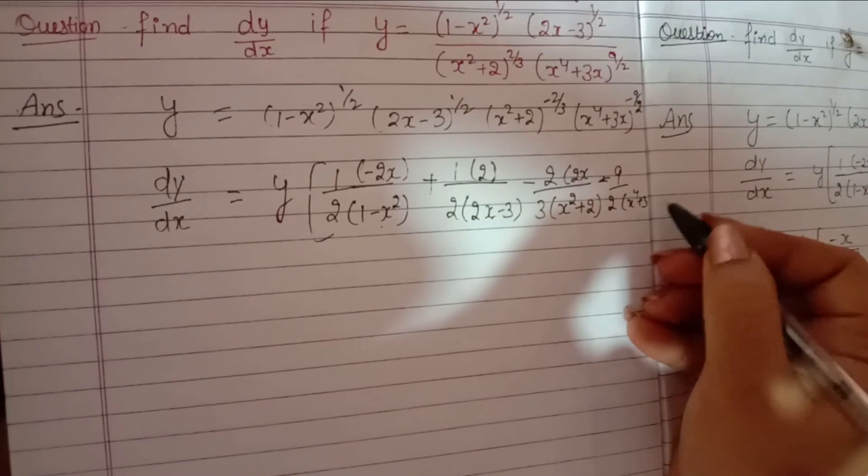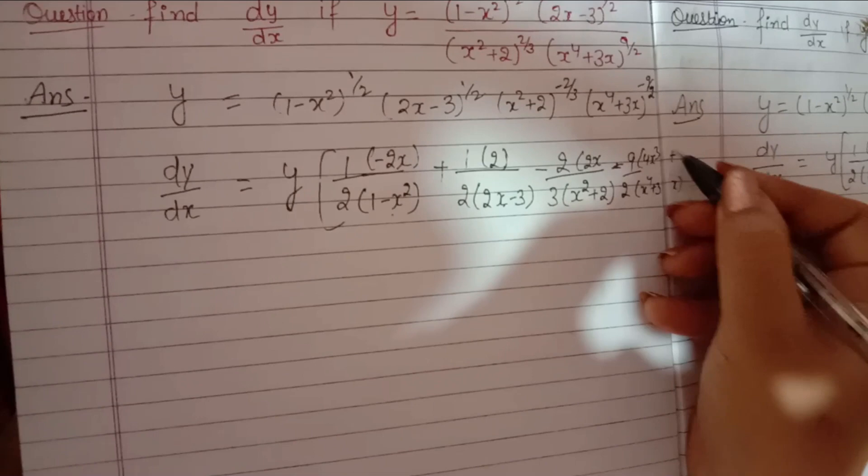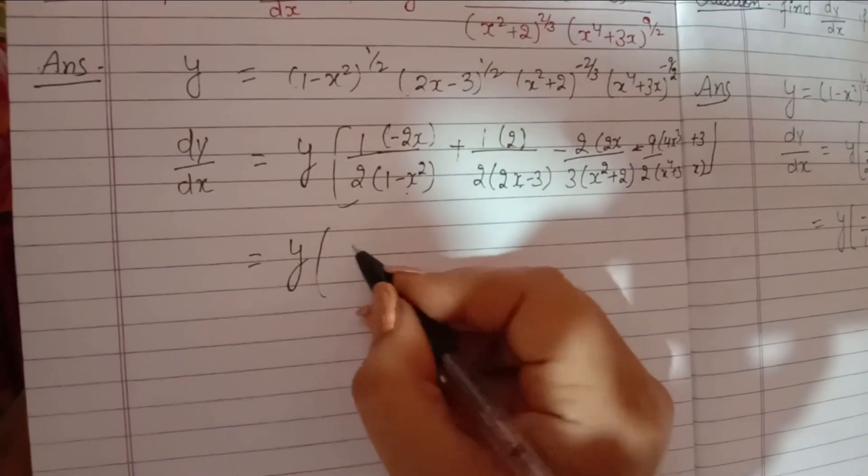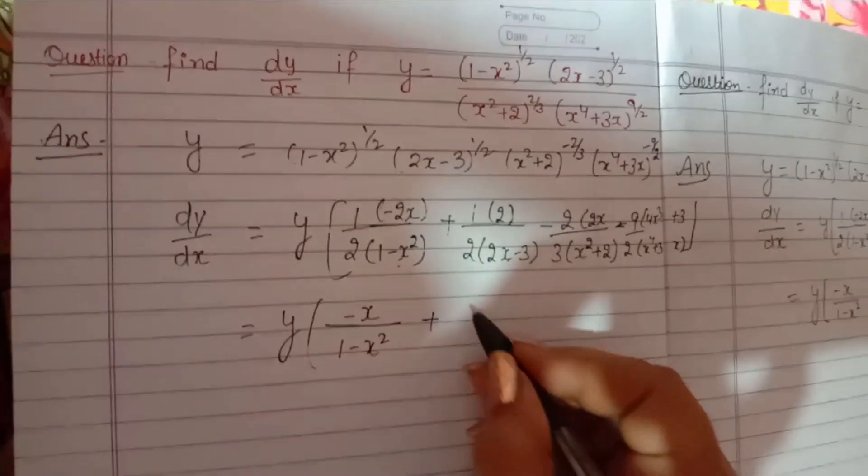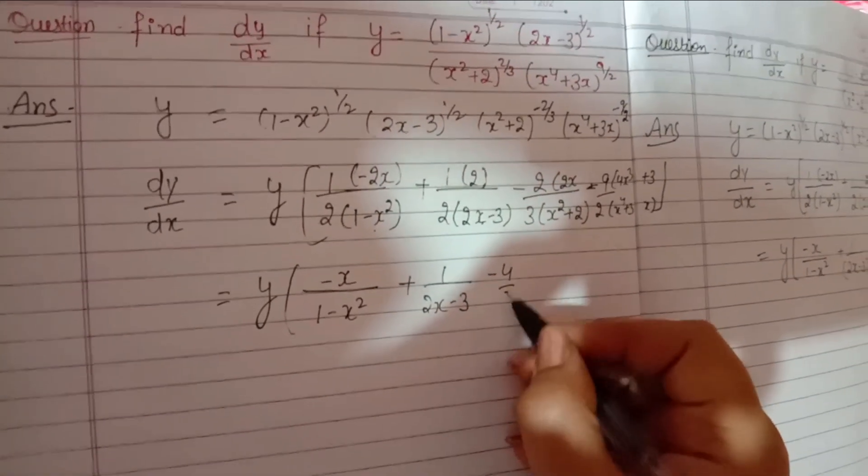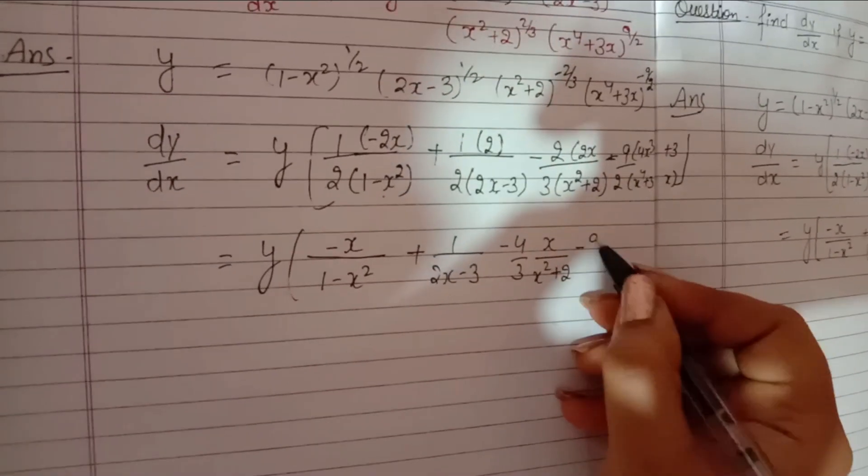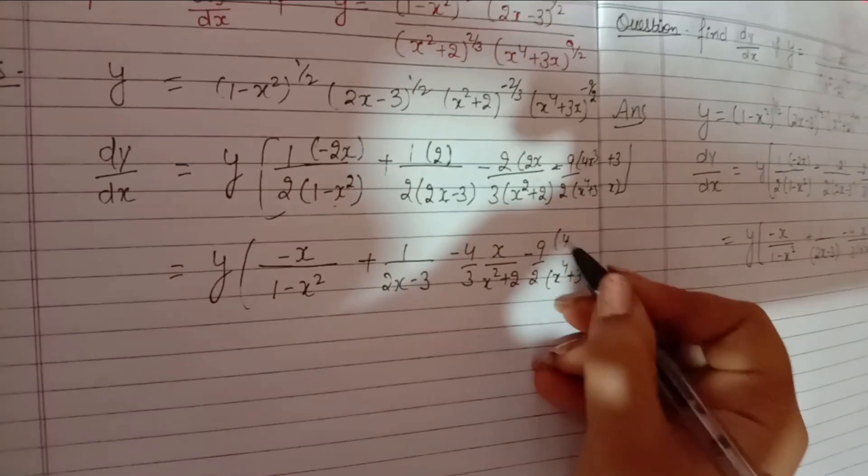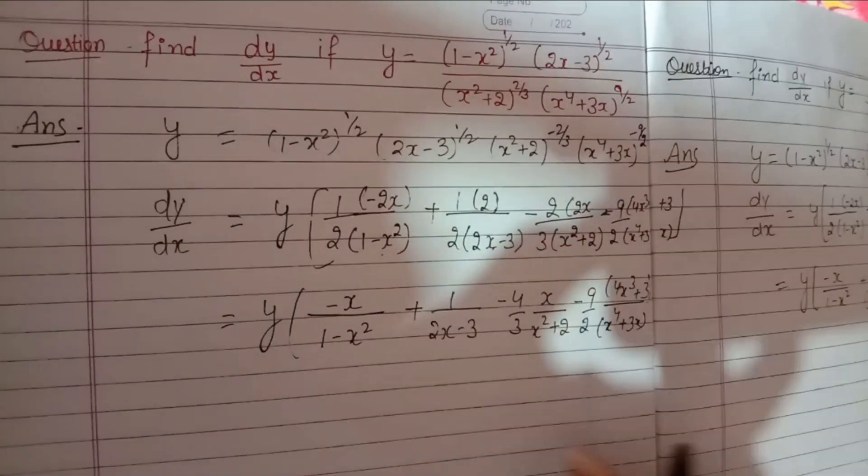We will solve minus x upon 1 minus x squared plus 1 upon 2x minus 3 minus 4 upon 3 x upon x square plus 2 minus 9 upon 2 x to the 4 plus 3x. We will find